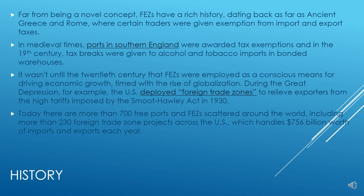Free economic zones have a rich history dating back to ancient Greece and Rome, where certain traders were given exemption from import and export taxes. In medieval times, ports in southern England were awarded tax exemptions, and in the 19th century, tax breaks were given to alcohol and tobacco imports in bonded warehouses. It was not until the 20th century that free economic zones were employed as a conscious means for driving economic growth, timed with the rise of globalization. During the Great Depression, the US deployed foreign trade zones to relieve exporters from high tariffs imposed by the Smoot-Hawley Act of 1930. Today, there are more than 700 free ports and free economic zones around the world, including more than 230 foreign trade zone projects across the United States, handling $756 billion worth of imports and exports each year.